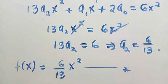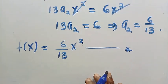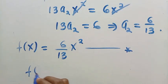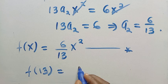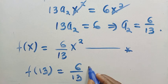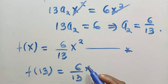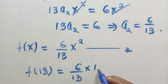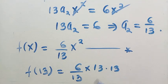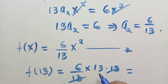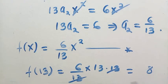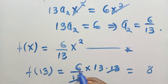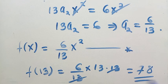Since the equation asks us to find f of 13, we substitute x equals 13: f of 13 equals (6/13) times 13² equals (6/13) times 169 equals 6 times 13 equals 78. Therefore f of 13 equals 78.